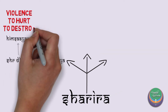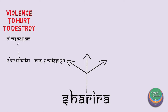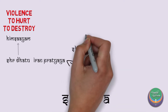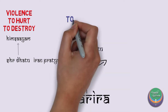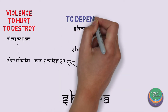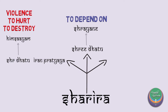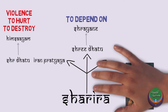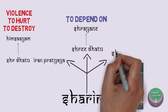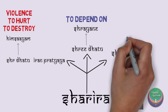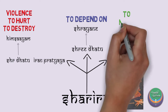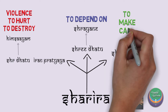According to the Garbhopanishad, the term Sharira is told to be derived from Shrayane, meaning to depend on. Finally, Acharya Yaska, who was a famous Sanskrit grammarian, mentions that Sharira gets its origin from the root word Sham.